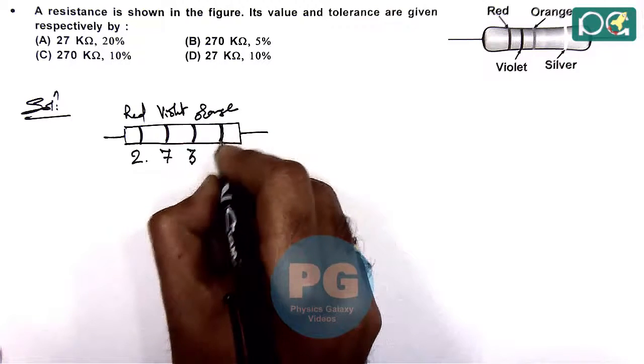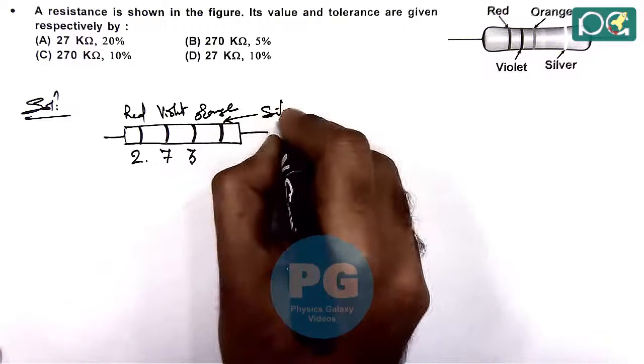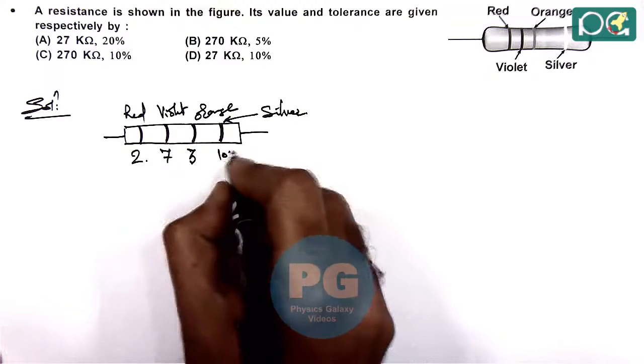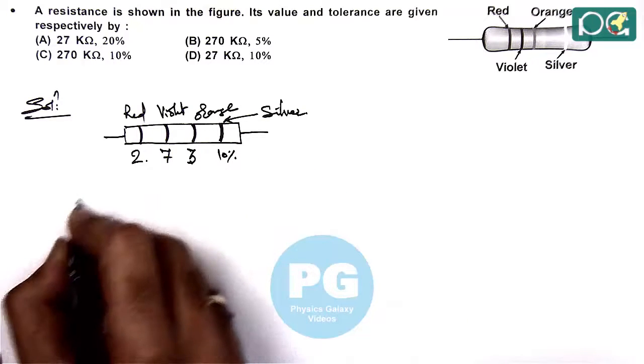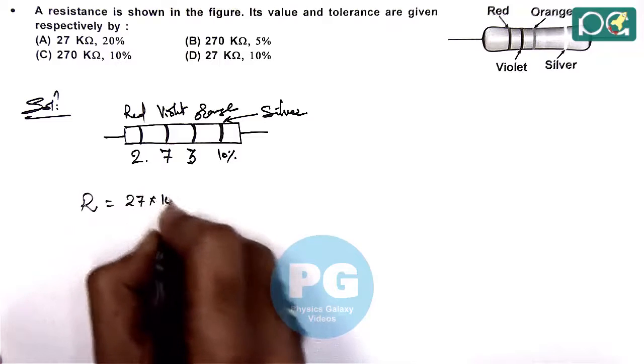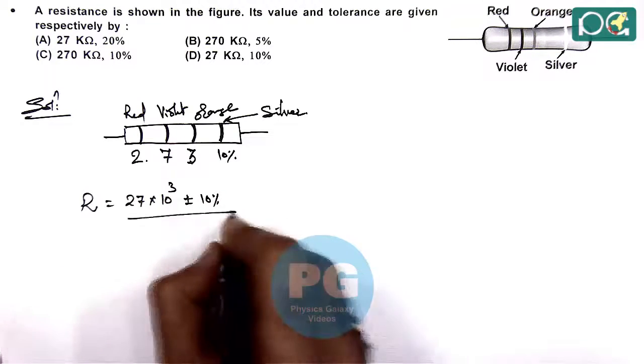And the last one which is corresponding to tolerance, this is silver which is corresponding to a tolerance of 10 percent. And here value of resistance we can write 27 into 10 to the power 3 plus minus 10 percent in ohms.